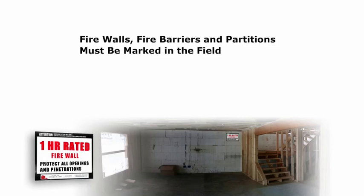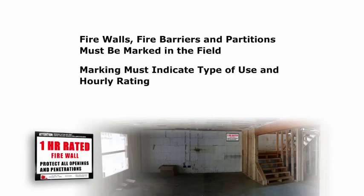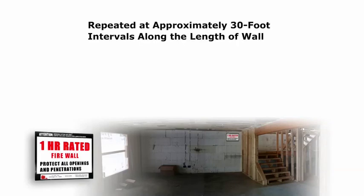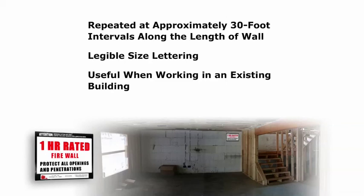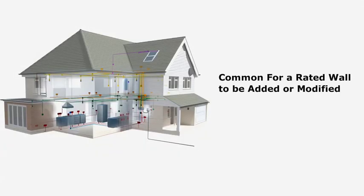The codes now require that fire walls, fire barriers, fire partitions, smoke barriers, and smoke partitions be marked in the field. The marking must indicate the type of use — for example, fire barrier or fire partition — and the hourly rating it provides. This mark can be above the finish ceiling but must be accessible. The information must be repeated at approximately 30-foot intervals along the length of the wall in legible-sized lettering. This is not required in certain residential uses with drywall ceilings, but it is very useful when working on an existing building to quickly locate rated walls.